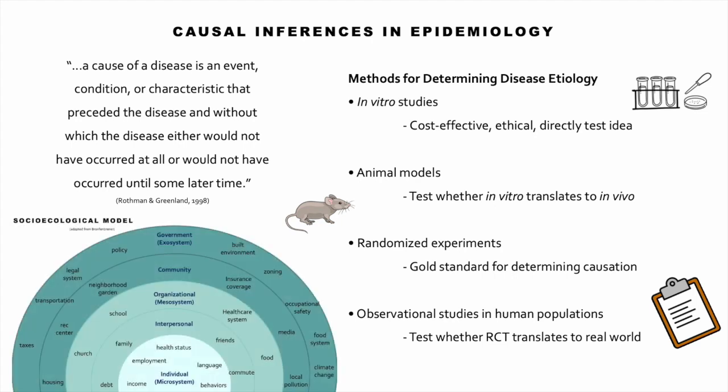In class one of this course, I briefly introduced the socio-ecological model as an example of a framework for understanding the cause of disease as being multifactorial. The causes of most diseases in humans are very complex, which is why sometimes even randomized controlled trial findings don't translate well into the real world — because people have all these other factors at play that influence human health and the development of or protection from disease.